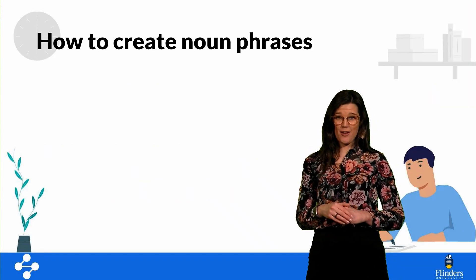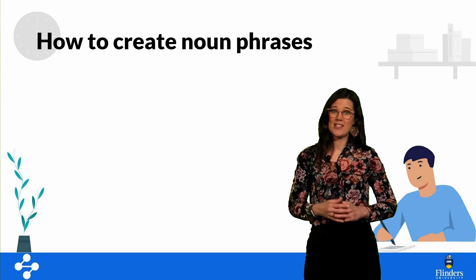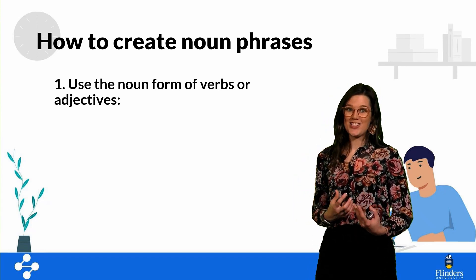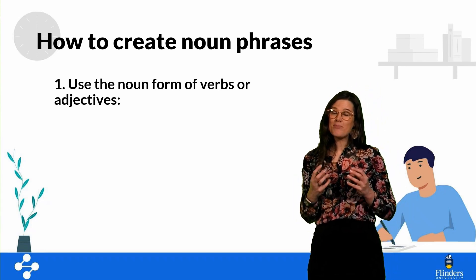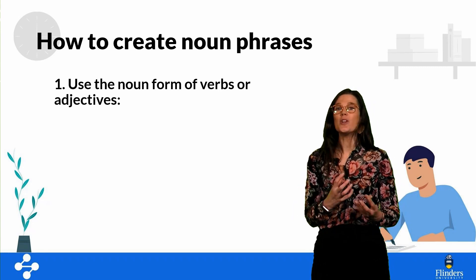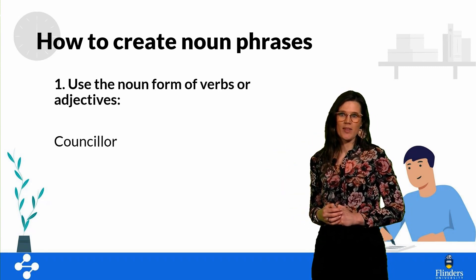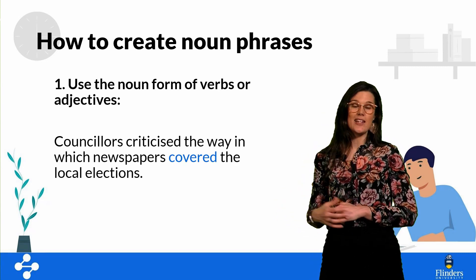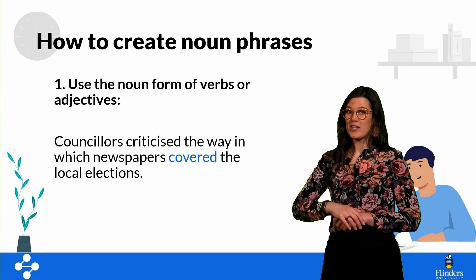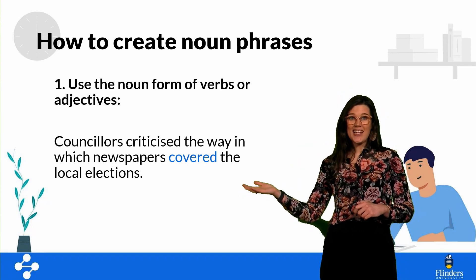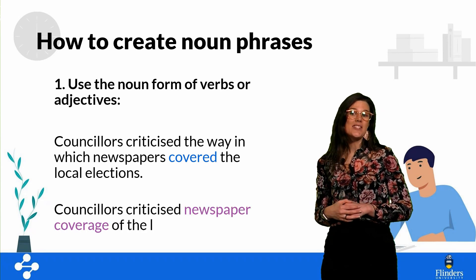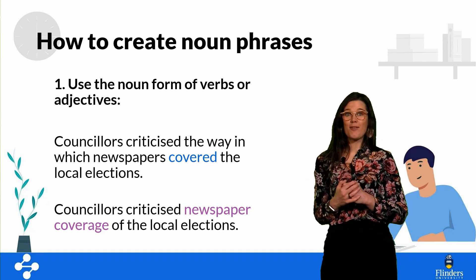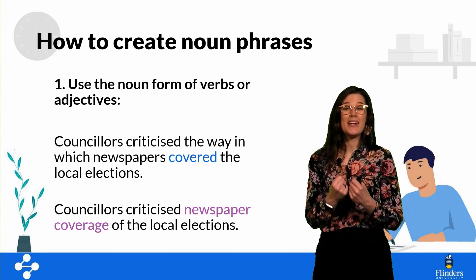Let's look at how we create noun phrases. The first way is to use the noun form of verbs or adjectives — this is why it's important to know our word families. For example, 'counselors criticized the way in which newspapers covered their local elections' becomes 'counselors criticized newspaper coverage of the local elections.' Newspaper coverage is a noun phrase, and the sentence is shorter and more formal.